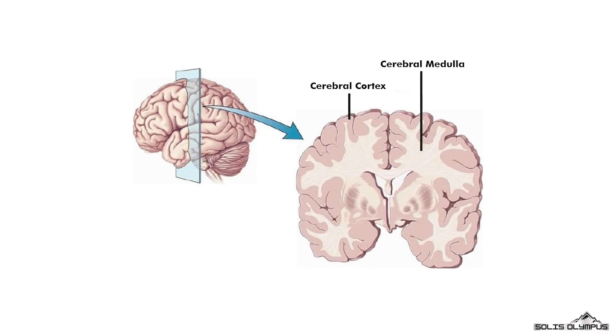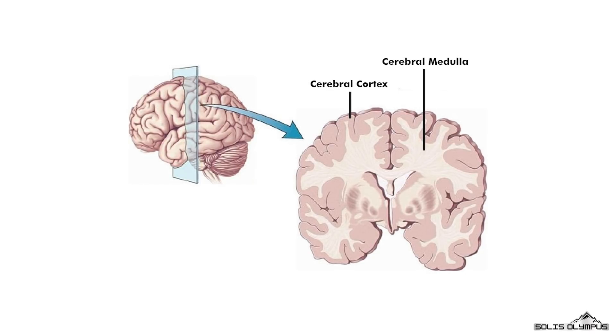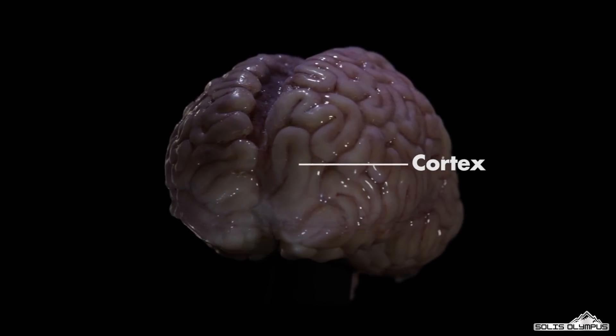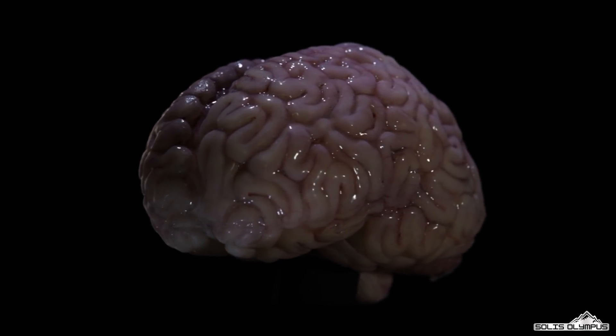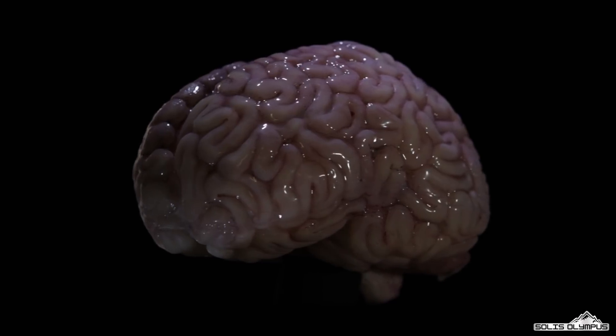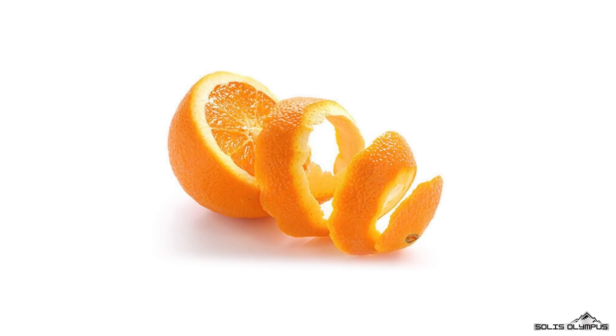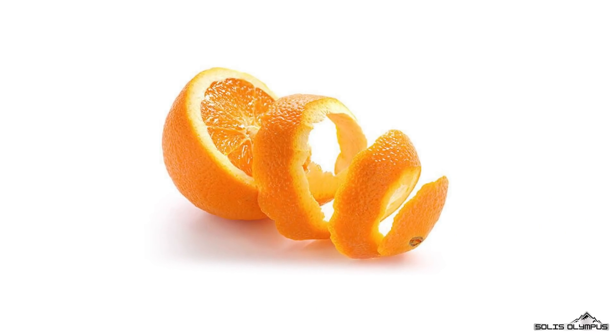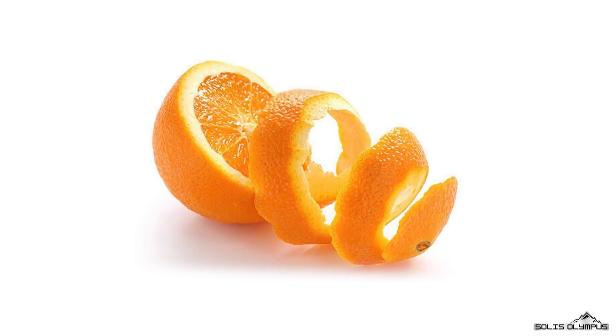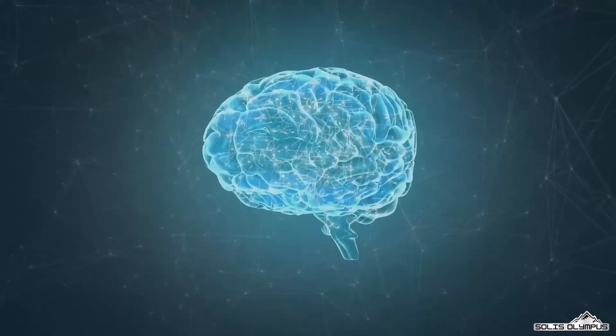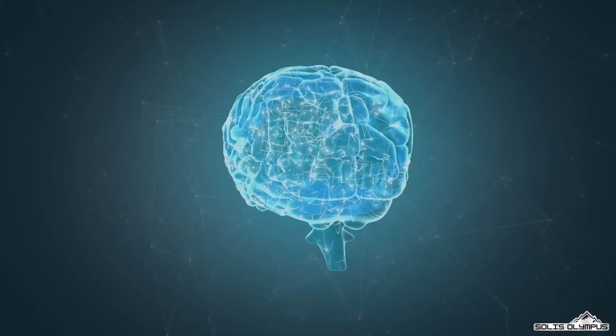The cerebrum consists of two regions: the outer darker region called cerebral cortex and the inner whitish region called cerebral medulla. The surface of the cerebrum is called the cortex. It has a folded appearance with hills and valleys. Because of the presence of neuronal cell bodies, it appears grayish. You can remember the cerebral cortex like the orange peel. The folding of the cortex increases the brain's surface area, allowing more neurons to fit inside the skull and enabling higher functions.